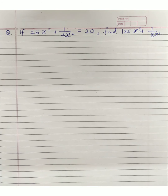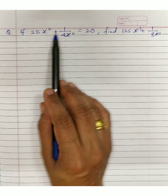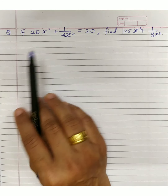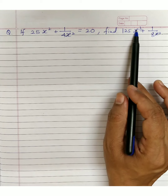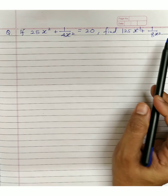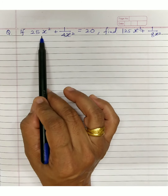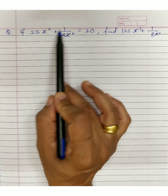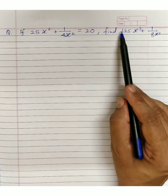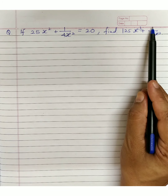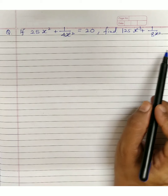The question is: 25x² + 1/(4x²) = 20. Find 125x³ + 1/(8x³). What you need to understand here is that 25x² is a perfect square, 1/(4x²) is a perfect square, and 125x³ and 1/(8x³) are perfect cube terms.